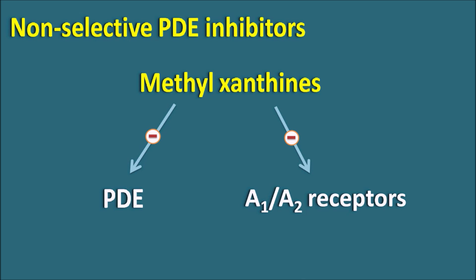One limitation of methylxanthines is their narrow therapeutic window. Theophylline is particularly used as an anti-asthmatic agent because it produces bronchodilatation, but it has a narrow therapeutic window — the gap between the therapeutic and lethal dose is very small. Additionally, theophylline can inhibit metabolic enzymes like cytochrome P450, resulting in many drug interactions. That is why methylxanthines nowadays have limited clinical use, as better alternative drugs are available.